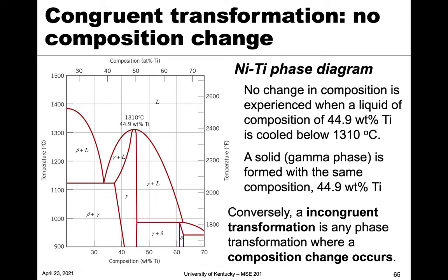A congruent phase transformation is the opposite of an incongruent transformation. An incongruent transformation is any phase transformation where composition does change. A lot of the ones we've already talked about follow that — for example, a eutectic. If we start with a liquid of the eutectic composition and go down, it goes into two solids which inherently have to change composition. So a eutectic is an incongruent phase transformation.